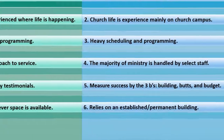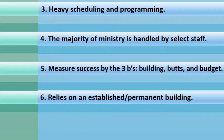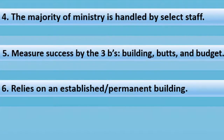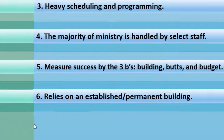Number six for attractional: relies on an established permanent building. The life of the church revolves around a central location where all the services, programs, and events take place. At the central location, there is also a stage with technologically advanced lighting, stadium-like seating, all facing in one direction, all with the purpose of putting on a good show on a weekly basis.